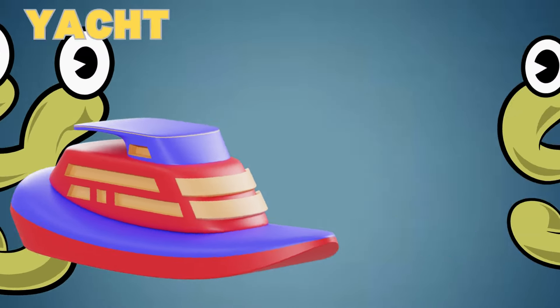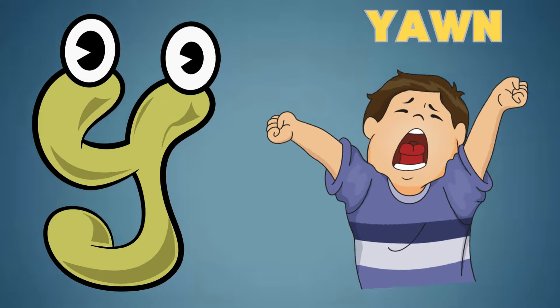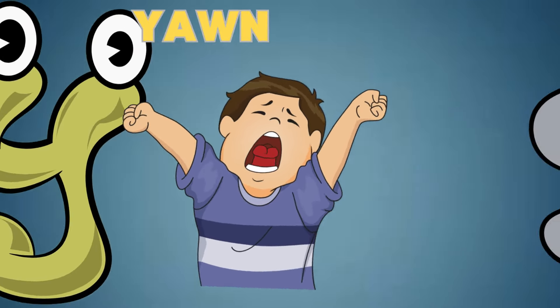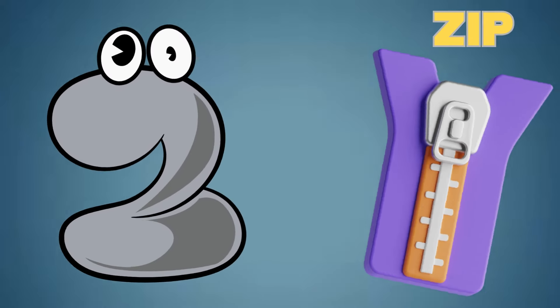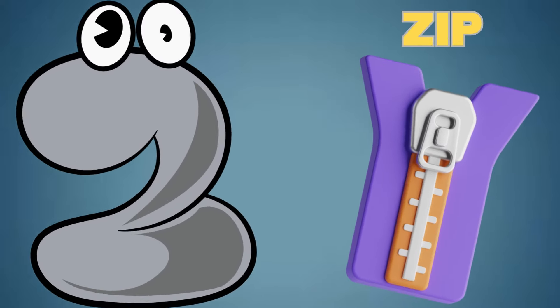Y is for Yacht. Y is for Yawn. Z is for Zebra. Z is for Zip.